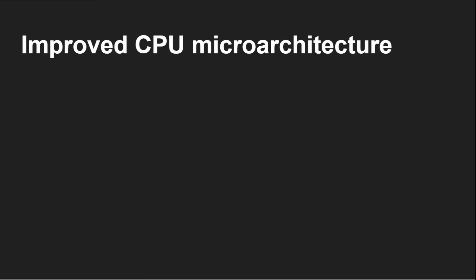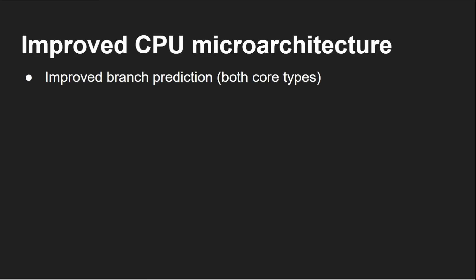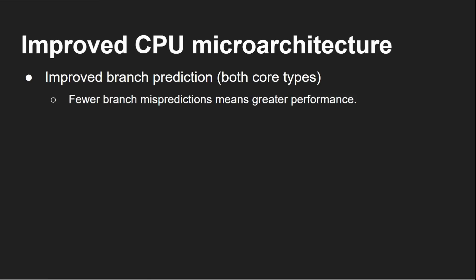The improved CPU micro-architecture refers to how the chip is internally designed — the internals are different in each generation, though it remains an ARM-based chip. Improved branch prediction means fewer branch mispredictions, which means greater performance. When instructions in the pipeline turn out to be wrong because a branch has taken the software somewhere else, you have to empty the pipeline and start again, causing a performance blip. Wider decode and execution engines for the performance cores mean more instructions can be fetched, decoded, issued, executed, and retired simultaneously, improving instruction-level parallelism.